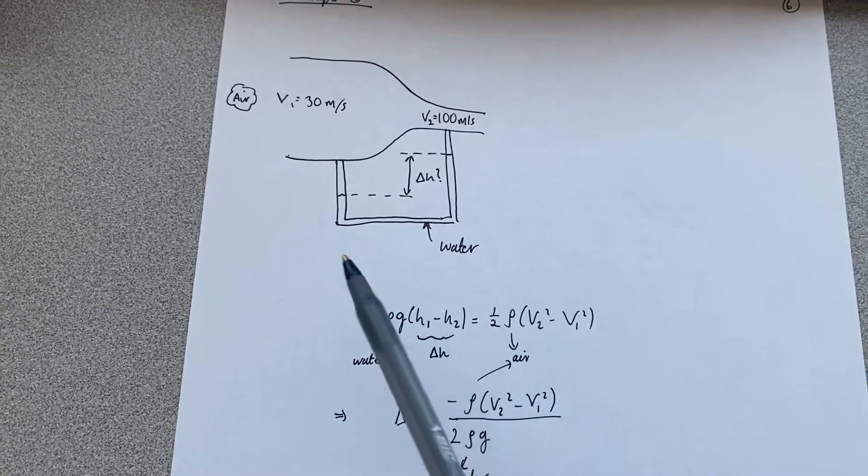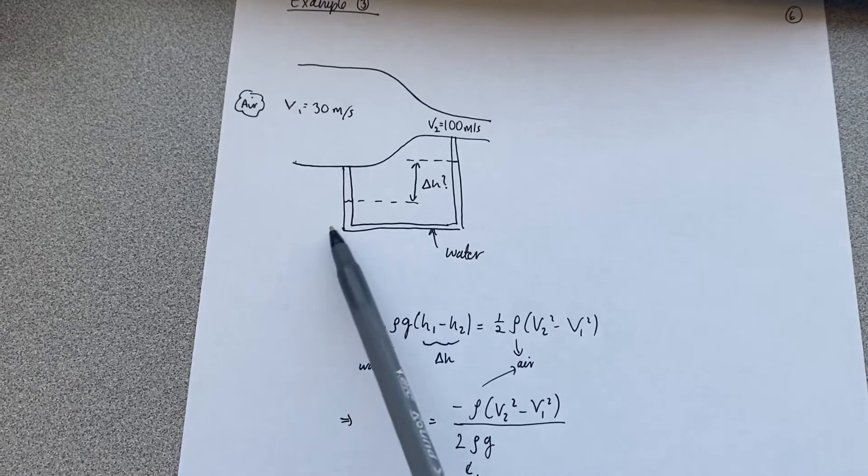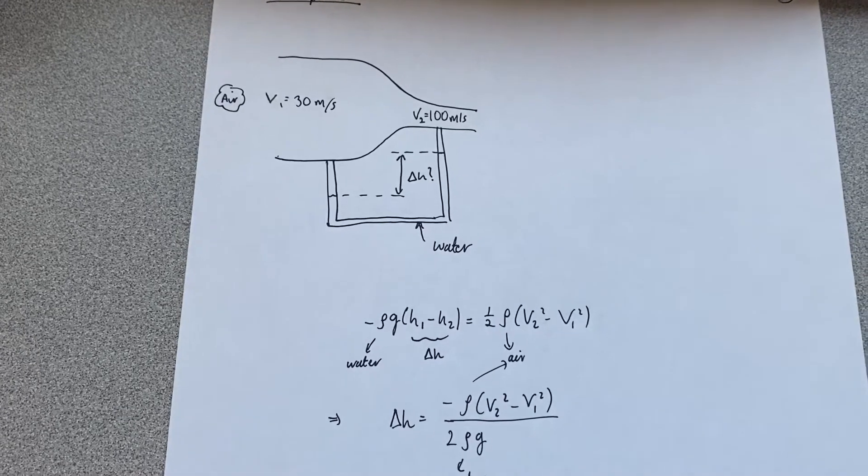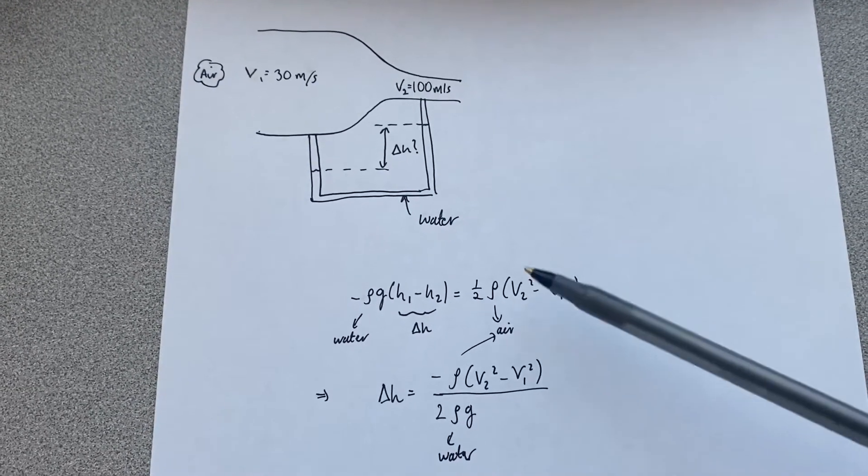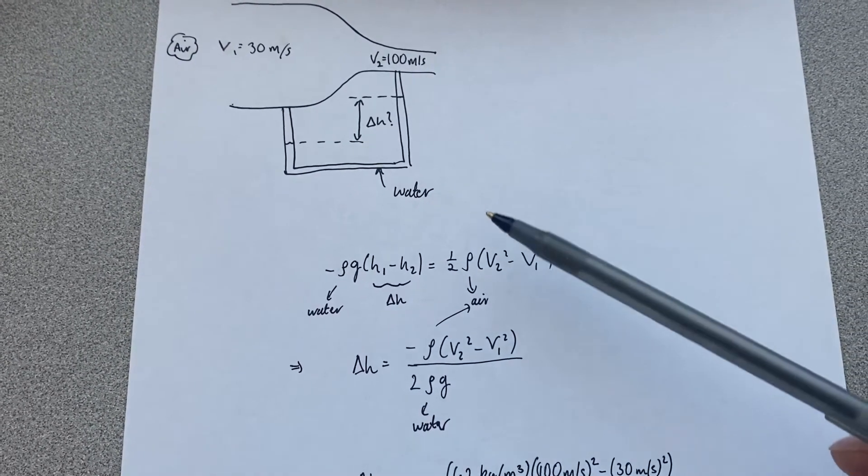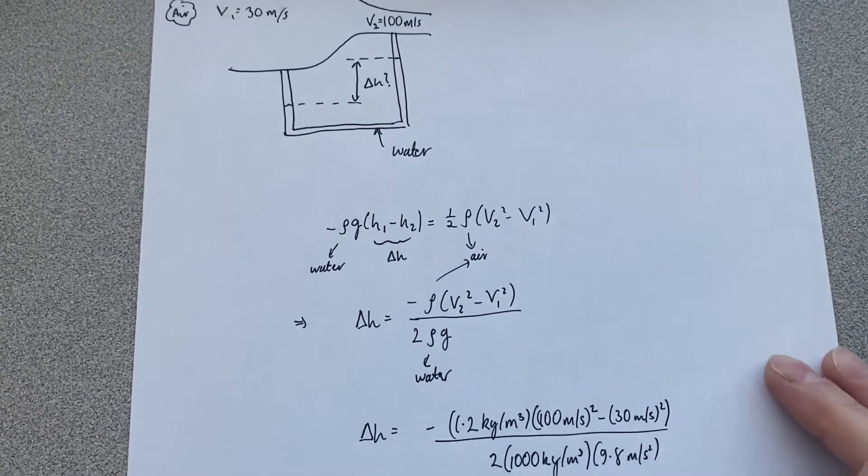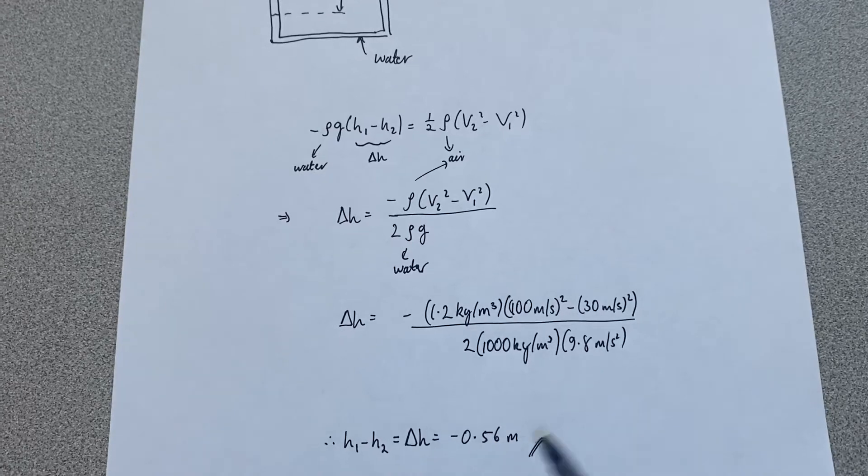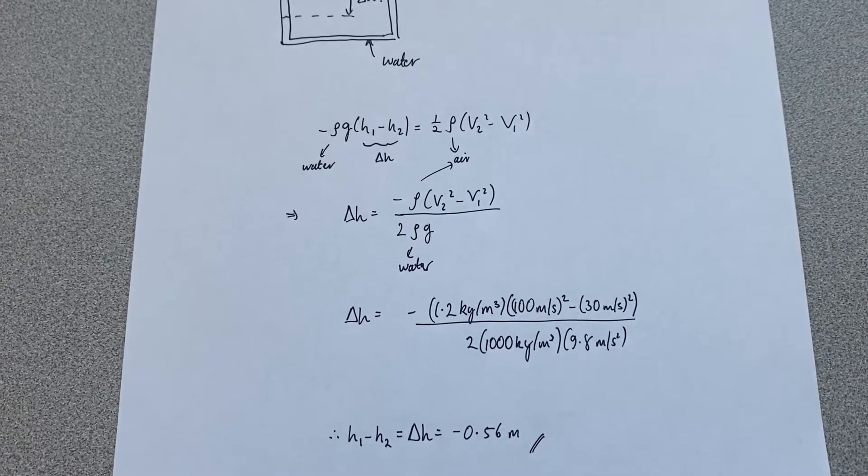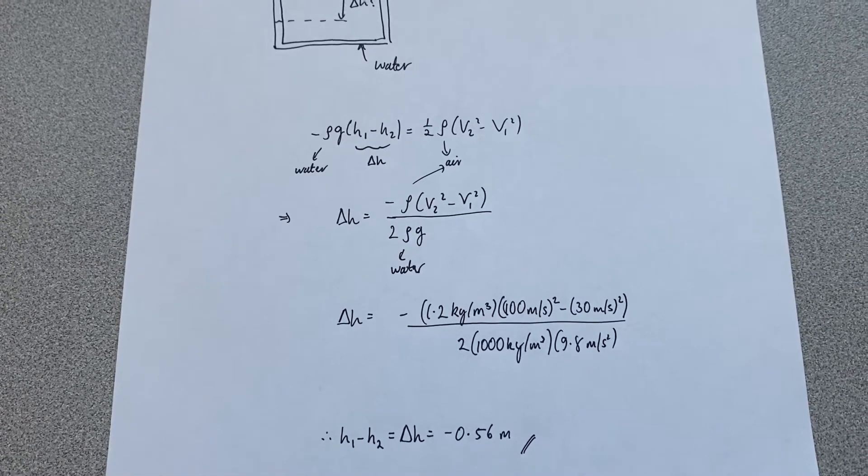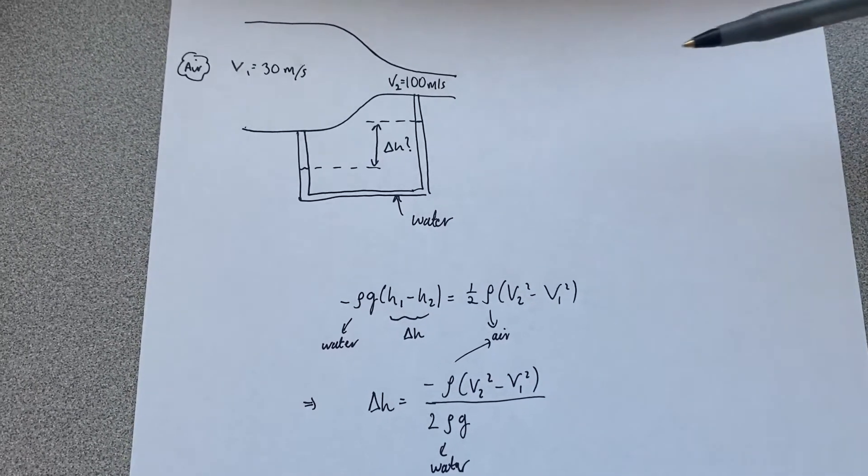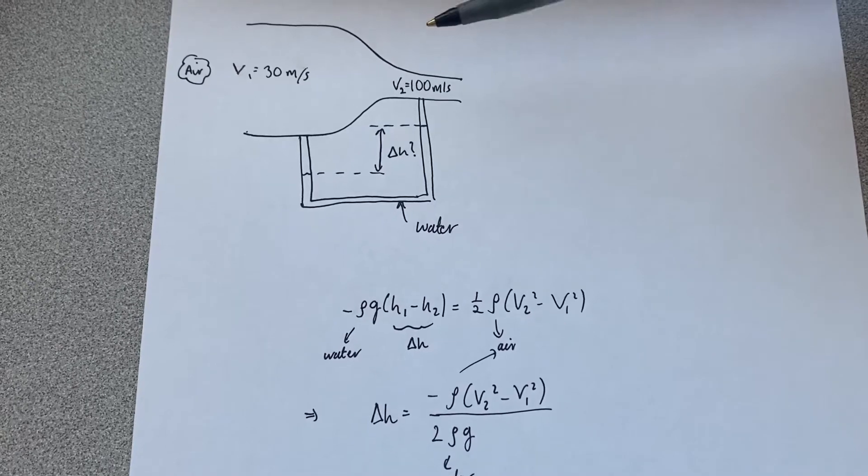In this particular case, we're expecting this difference to be negative, right? Because h1 is lower than h2. So rearrange that for delta h, plug in my values, and therefore I can calculate delta h, and as expected, it's a negative value.